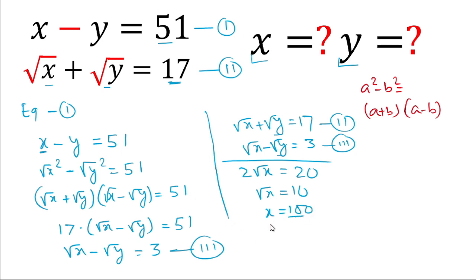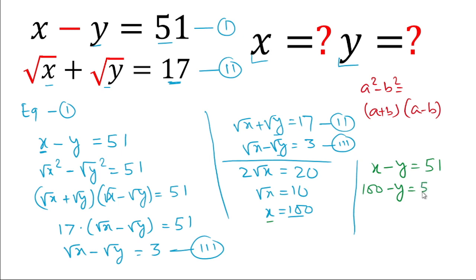To calculate the value of y, we use equation 1: x minus y equals 51. Substituting x as 100, we get 100 minus y equals 51. Rearranging, y equals 49. So the value of y is 49.